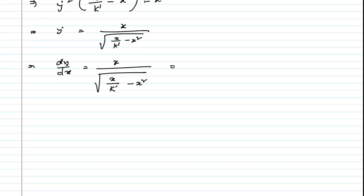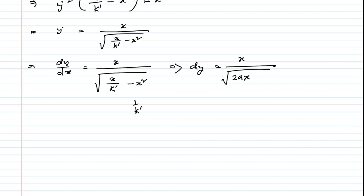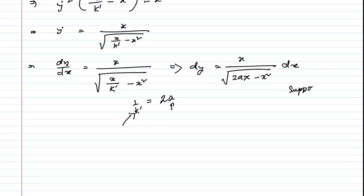So 1/k′ = 2a, where a is a constant. We now have dy/dx = √x / √(2ax − x²) dx. The integration of this expression will be shown from a worked example, since the integration technique should already be familiar to physics students.